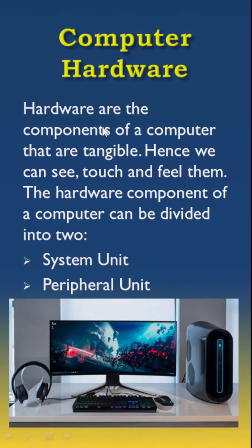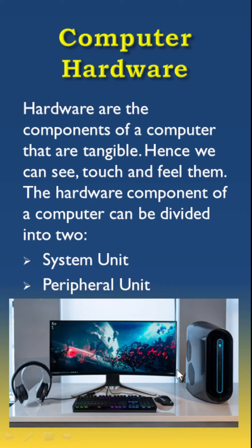Hardware are the components of a computer that are tangible — hence where we can see, touch, and feel them. So the monitor, the keyboard, the mouse, the system units, and all other parts of a computer that can be seen, touched, and felt are the hardware components of a computer.